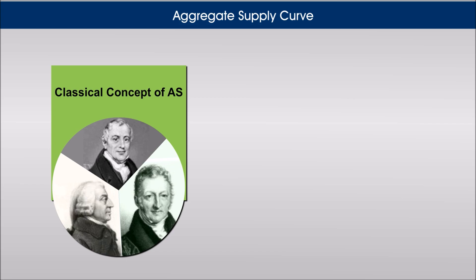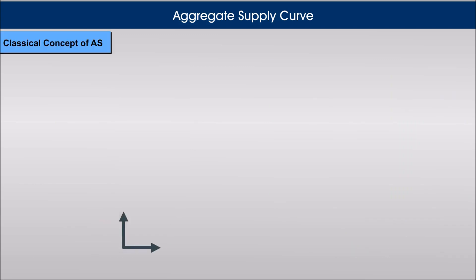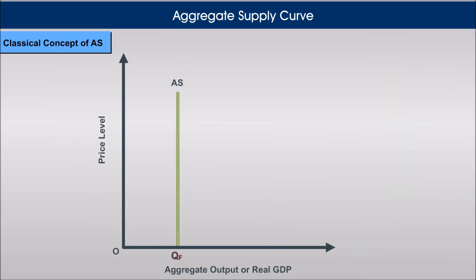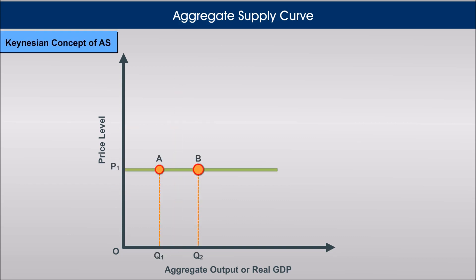There are two concepts that explain aggregate supply quite differently: the classical concept and the Keynesian concept. According to classical economists, there is no relation between aggregate supply and price level. They considered the aggregate supply curve as a perfectly inelastic curve and strictly believed that an economy always functions at the full employment level of output.